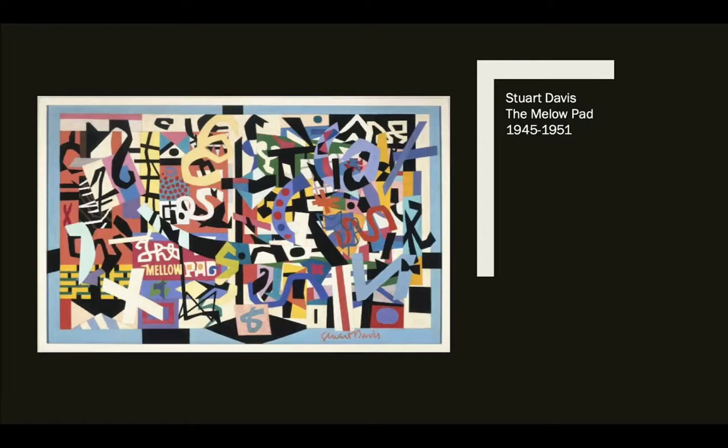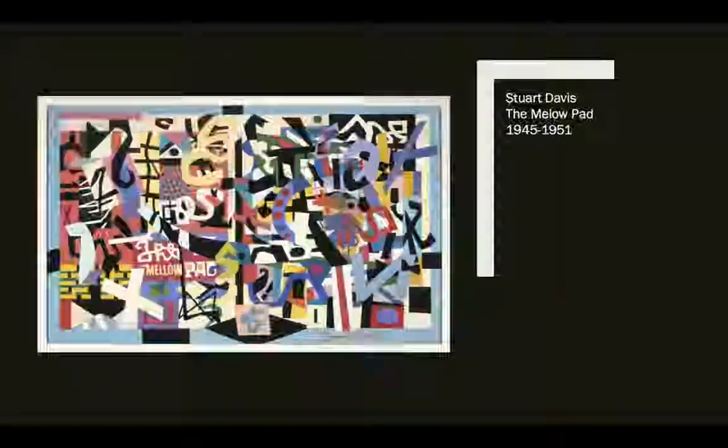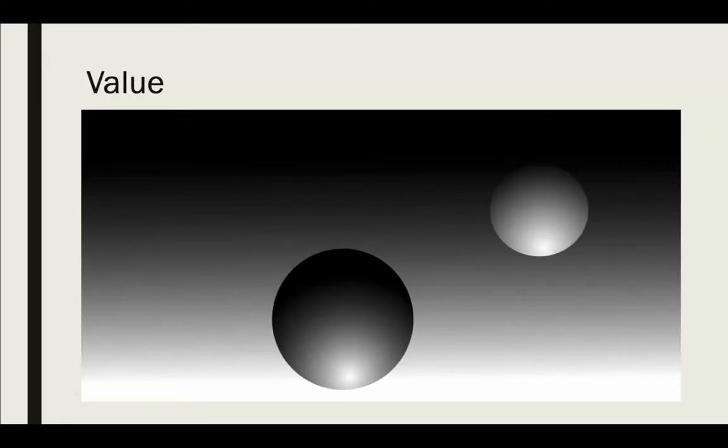To take a look at how shape is used by artists and designers, we'll look at this art by Stuart Davis, called the Mellow Pad from 1945 to 1951. Ignoring the type, he's using an assemblage of shapes which, all taken together, form an overall impression.